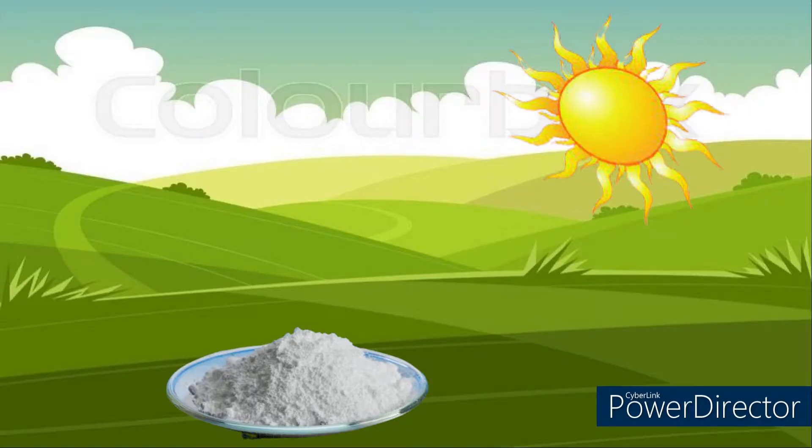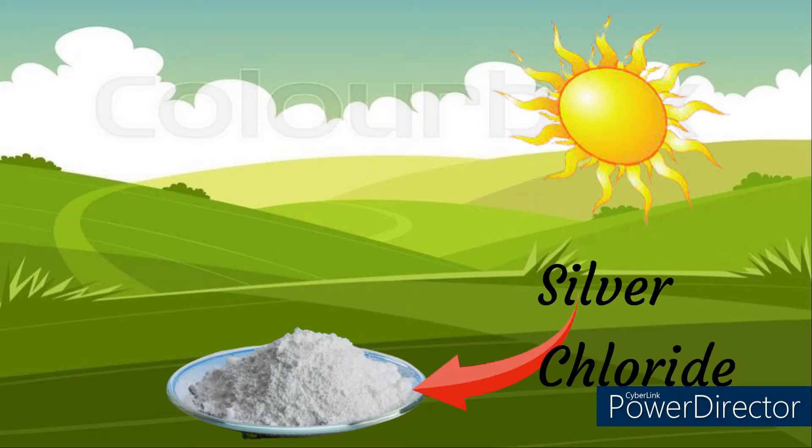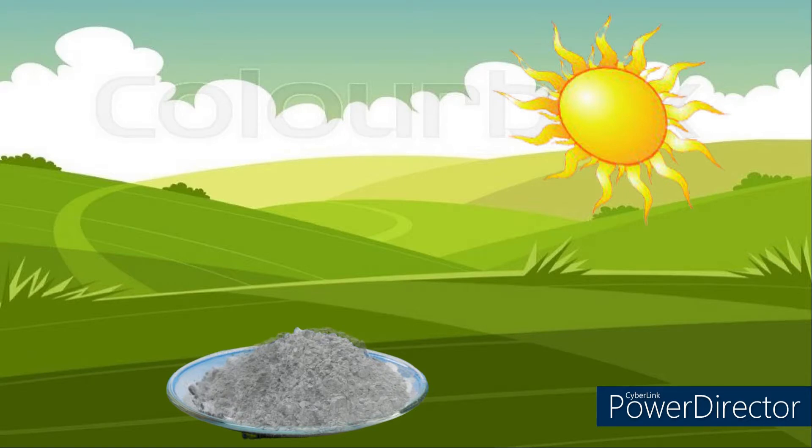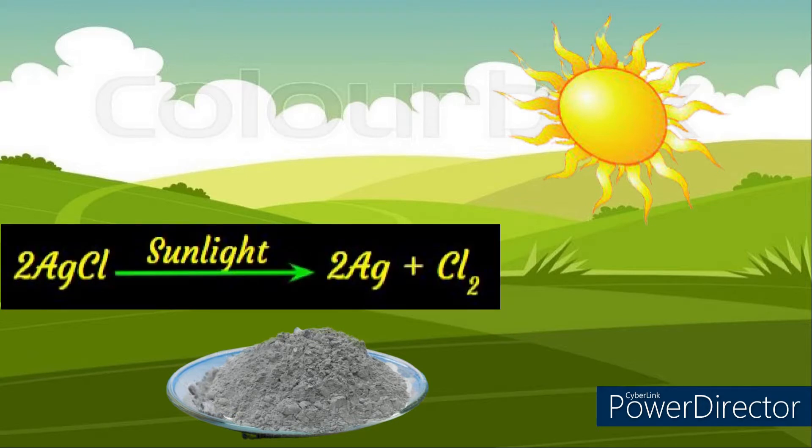it is called photolytic decomposition reaction. For example, take two grams of silver chloride in a china dish and place it in the sunlight for some time. Silver chloride is a white color powder. Silver chloride decomposes into silver and chlorine gas. Chlorine gas escapes into air, and silver has a grey color and is left in the watch glass. The equation for this is 2AgCl in the presence of sunlight gives rise to 2Ag plus Cl2.